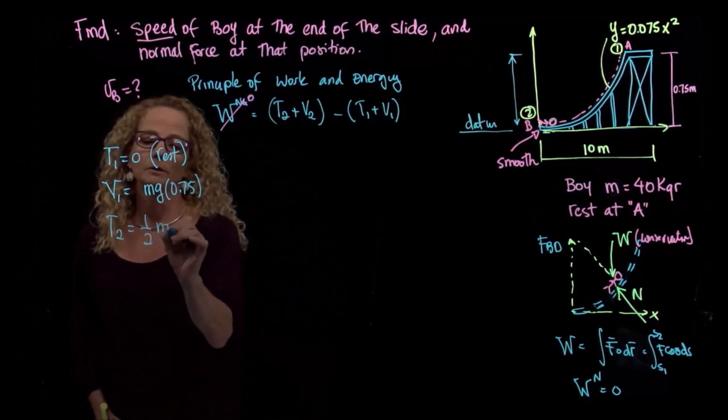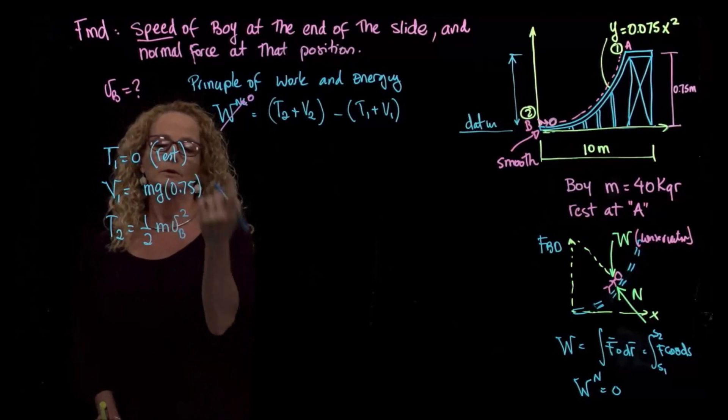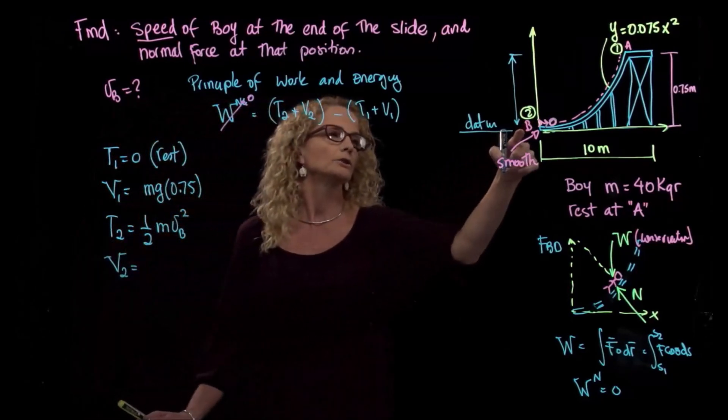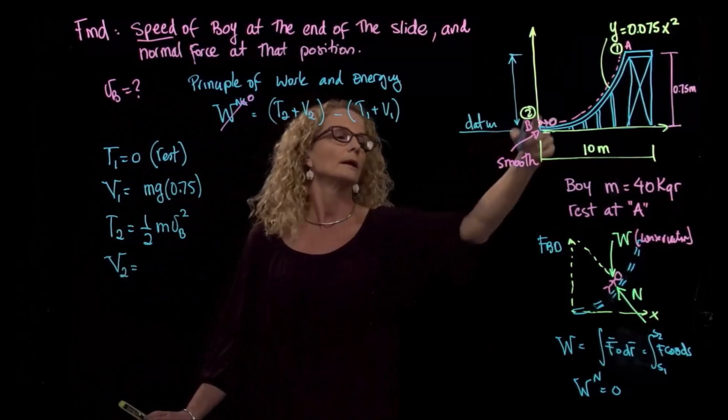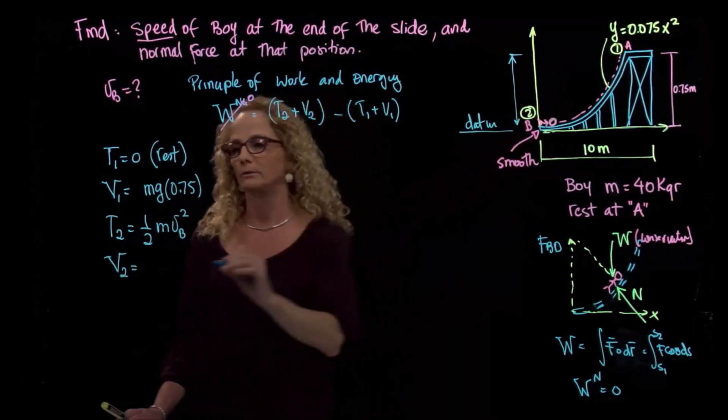And then I have kinetic energy at the end, which is velocity of the boy, which is actually exactly what I want to find, and then potential energy at the end, which is zero because we already lost all the potential energy of the weight because that's where we put our datum. So it's zero.